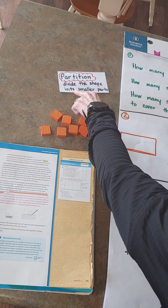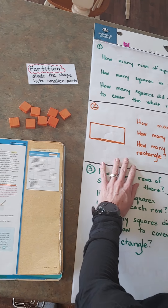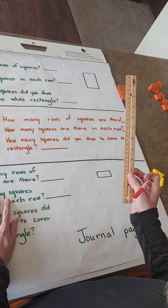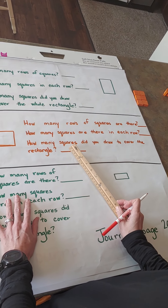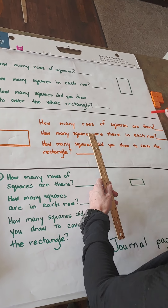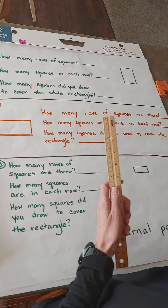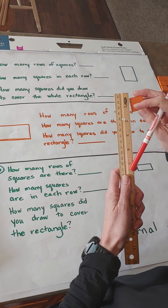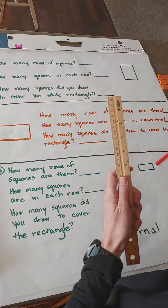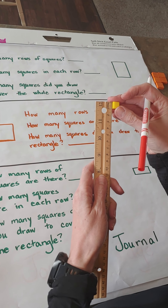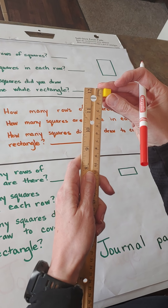Remember, partition means to divide the shape into smaller parts. Now I know you don't have your cubes and your squares but you may have a ruler at home, so that might be something I would reach for. Because as we talked about in our last lesson, the orange square is going to be about one inch — that's my larger space, one inch. And my cube is about one centimeter, the smaller space ones.